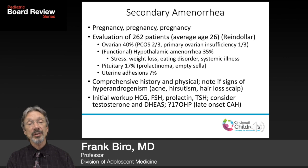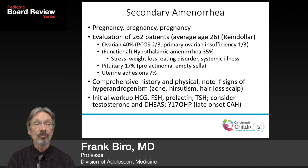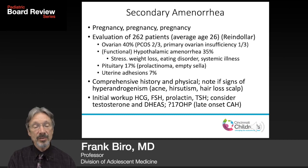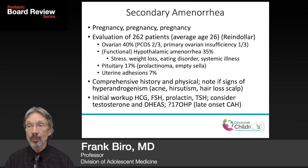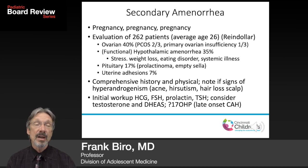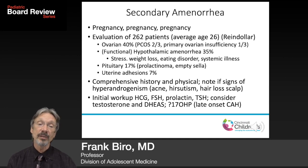The most important diagnostic tools remain history and physical, with special attention to signs of hyperandrogenism: moderate-to-severe acne, hirsutism, and hair loss on the scalp. The workup includes pregnancy test, FSH, prolactin, TSH, and consider testosterone, DHEAS, and 17-hydroxyprogesterone. I've had patients with late-onset CAH — one 16-year-old presented with severe acne, hirsutism, clitoromegaly, and short stature well below mid-parental height, and was diagnosed with late-onset CAH based on 17-OHP.